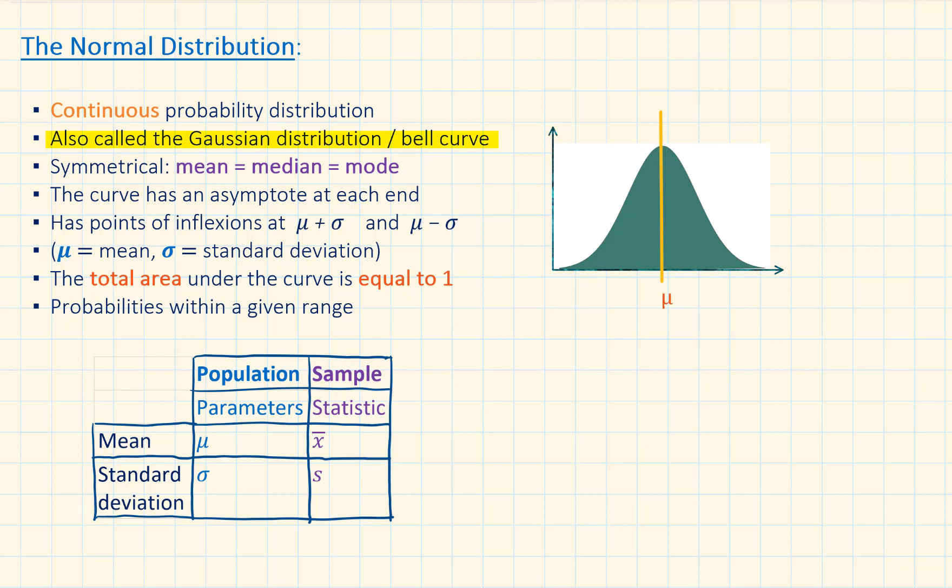It is also called the Gaussian distribution, and due to its shape, it's often referred to as the bell curve. It's perfectly symmetrical, the mean is equal to the median and the mode, and it has an asymptote at each end.